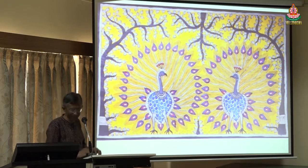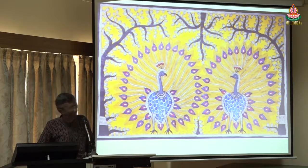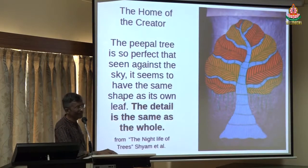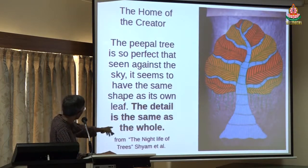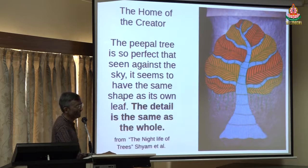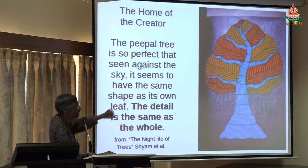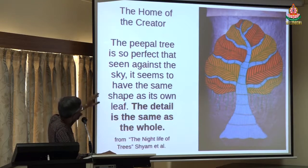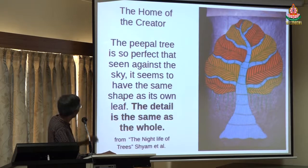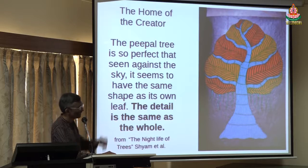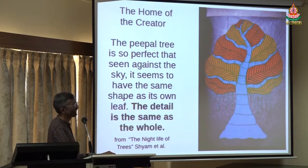This is an example from a book called The Night Life of Trees written by a tribal artist from Jharkhand. They talk about a 'people tree' — it is so perfect that seen against the sky, it seems to have the same shape as its own leaf. The detail is the same as the whole. Professor Shishirai was talking about fractals — this is a tribal or deep Indian perspective on the same idea.